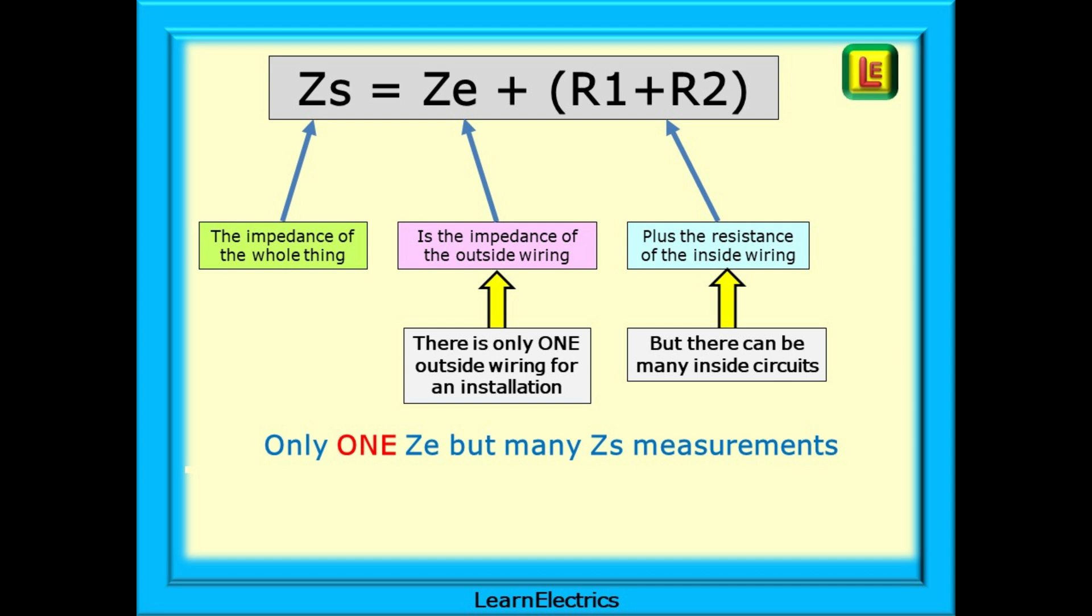Ze is the impedance of the outside wiring and there is only one outside wiring for any installation so there can only be one Ze. All the circuits share the same Ze. R1 plus R2 is the effective resistance of the internal circuit wiring. It's a dead test resistance from the consumer unit to the point of use. Each circuit in the property will have its own R1 plus R2. There can be lots of circuits so there can be lots of R1 plus R2 readings and an equal number of Zs measurements.